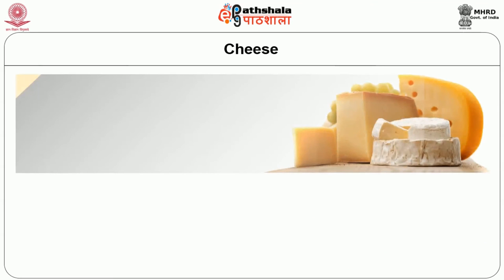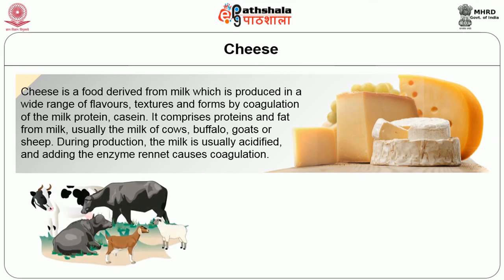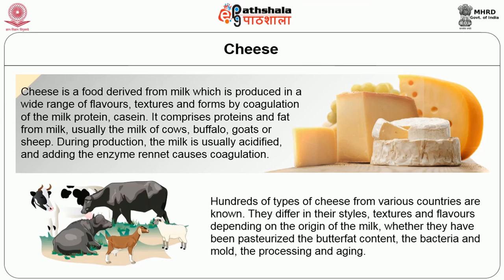Now we will see cheese. Cheese is a food derived from milk, produced in a wide range of flavors, textures and forms by coagulation of the milk protein casein. It comprises proteins and fats from milk — usually cow's milk, but also from buffalo, goats or sheep. During production, the milk is usually acidified and the enzyme rennet is added. Rennet is an enzyme which coagulates the milk. Hundreds of types of cheese from various countries are known, differing in style, texture and flavor depending on the origin of milk, whether they have been pasteurized, the butterfat content, the bacteria and mold used, and the processing and aging.